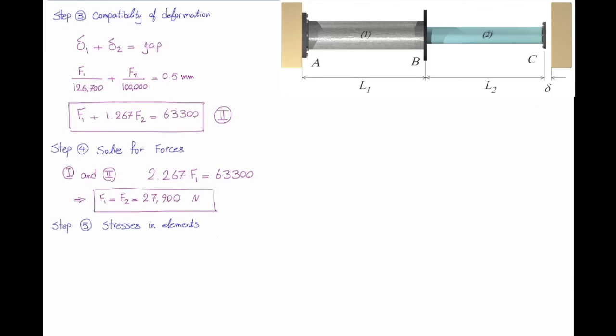Stress in the element is simply force over area. Sigma 1 is F1 divided by A1. F1 is 27,900 newtons. Area 1 is 380 and that gives me a stress equal to 73.5 megapascals. Stress in element number 2 is F2 divided by A2. F2 is similar. Area in the second element is 250 squared millimeters. And that gives me a stress equal to 111.7 megapascals.